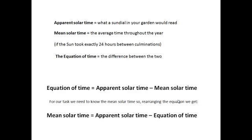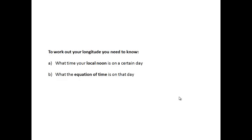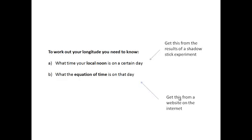To work out our longitude, we're going to work out the mean solar time. Rearranging the equation: mean solar time equals apparent solar time minus the equation of time. To work out longitude, we need two pieces of information: we need to know at what time GMT local noon happens on a certain day, and we need to know what the equation of time is on that day. Local noon we get from a shadow stick experiment; the equation of time we get from an internet site.